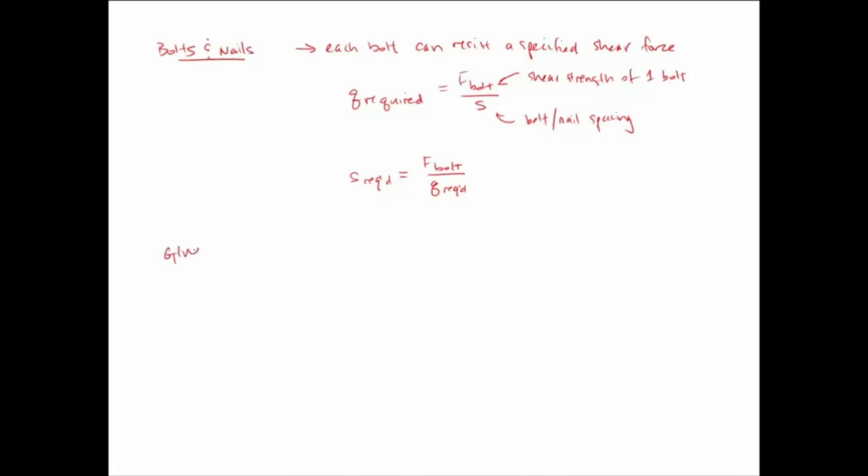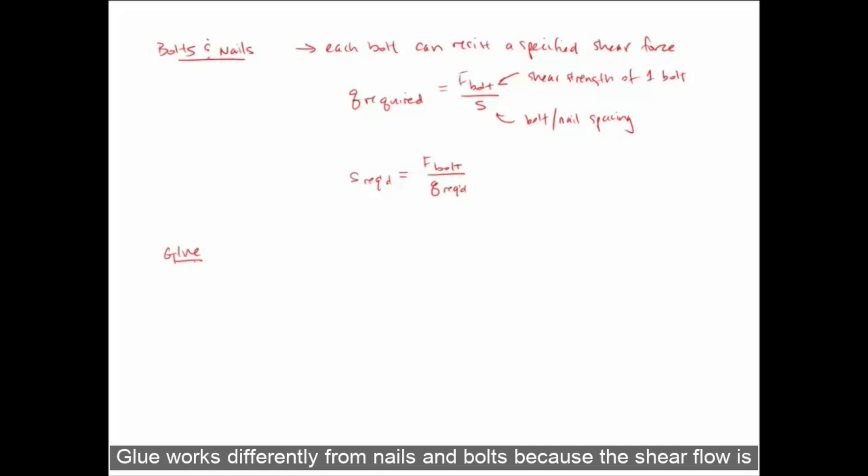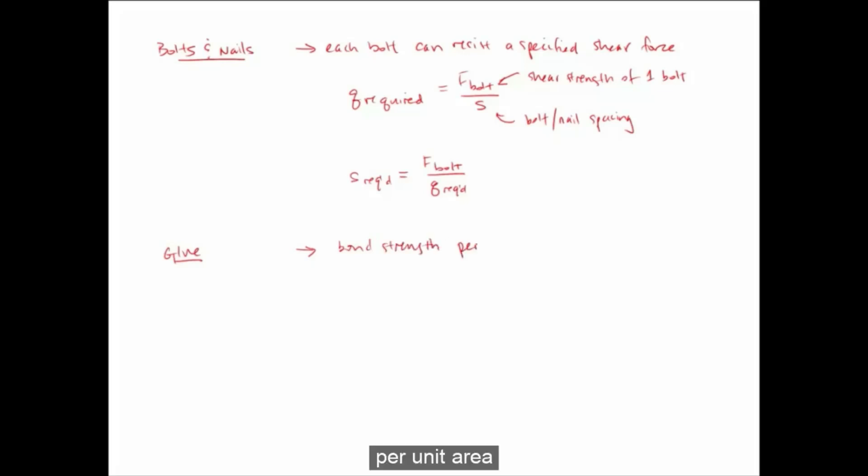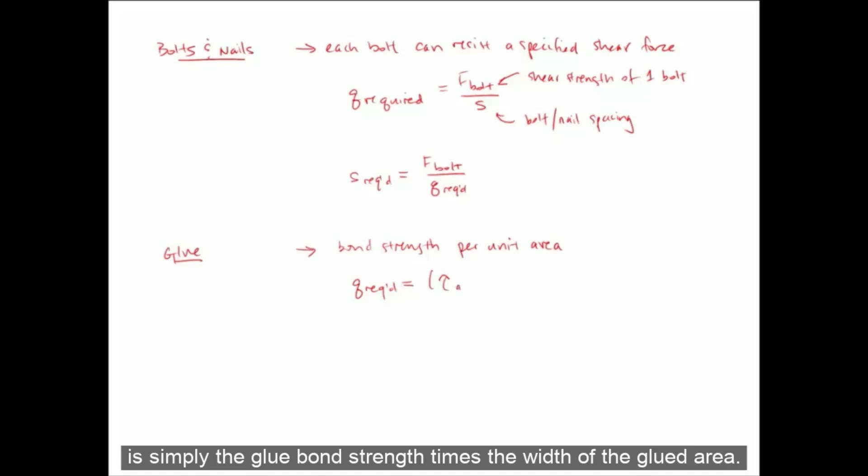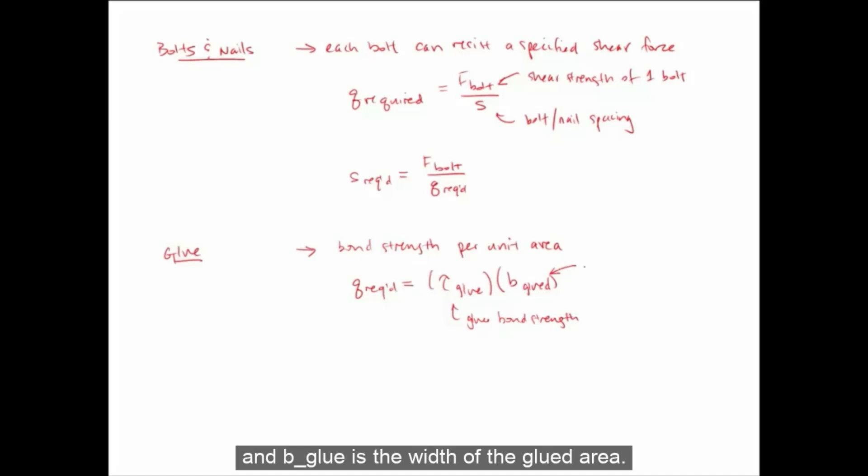And then we can move on to glue, which behaves a little differently. Glue works differently from nails and bolts because the shear flow is carried over a surface instead of contact points. So instead, we discuss glue with respect to a bond strength per unit area because it's applied over a surface. So the shear flow that is required is simply the glue bond strength times the width of the glued area. So here tau glue is the glue bond strength, and B glue is the width of the glued area. So we solve for B glued, which is simply Q required divided by the glue bond strength.